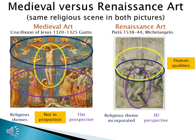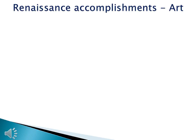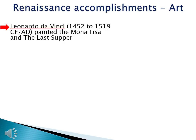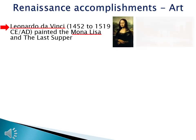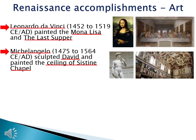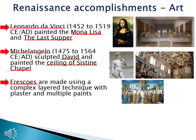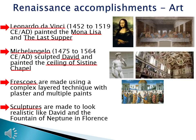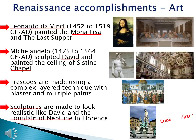Now let's look at some accomplishments in art. Leonardo da Vinci, around from 1452 to 1519 CE, painted the Mona Lisa and the Last Supper. Michelangelo, around from 1475 to 1564 CE, sculpted the Statue of David and painted the ceiling of the Sistine Chapel. We also have new techniques: frescoes are made using a complex layered technique with plaster and multiple paints — you're essentially painting the artwork into the wall itself. Sculptures are also made to look realistic, like David and the Fountain of Neptune in Florence, which is made in a classical or Renaissance style.